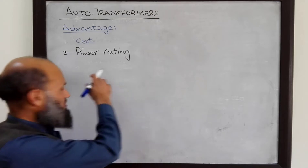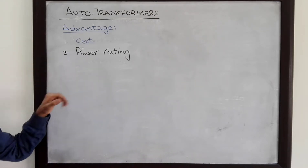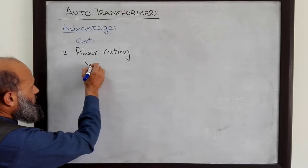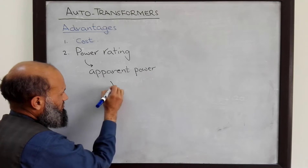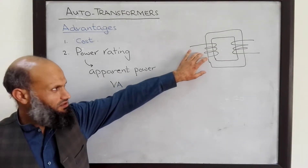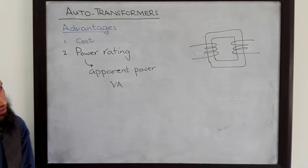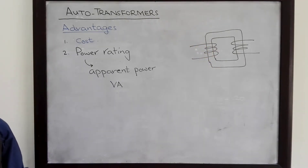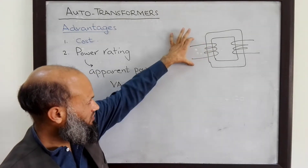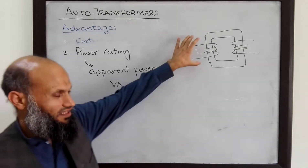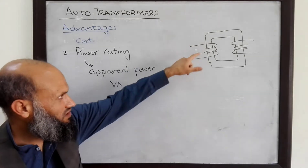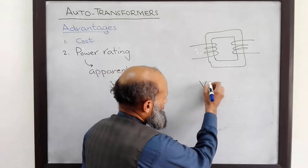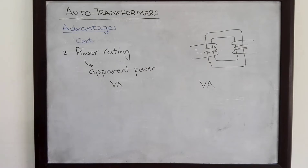The power ratings of electrical machines are always apparent power ratings — that is, the volt-ampere rating. The primary and secondary windings of transformers are made of copper; however, they still have some small resistance. When current flows in the windings, heating is produced, and therefore the maximum current the windings can handle is limited. Likewise, the maximum voltage that can be applied to the primary and secondary windings is limited, and therefore the apparent power rating is limited for a transformer.